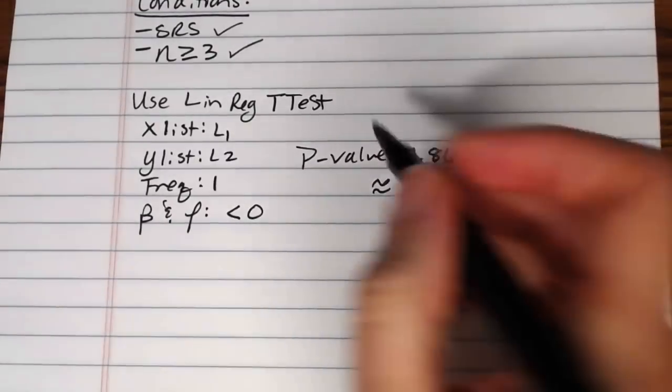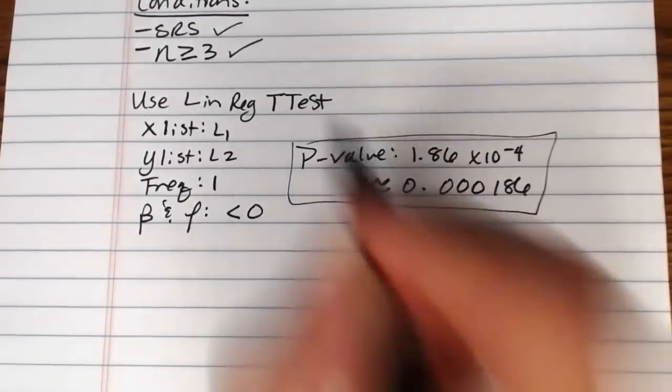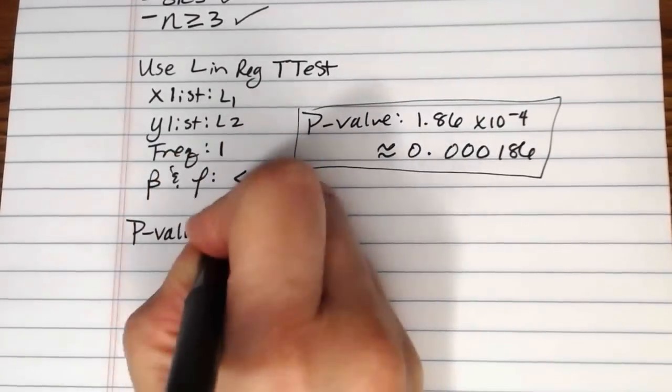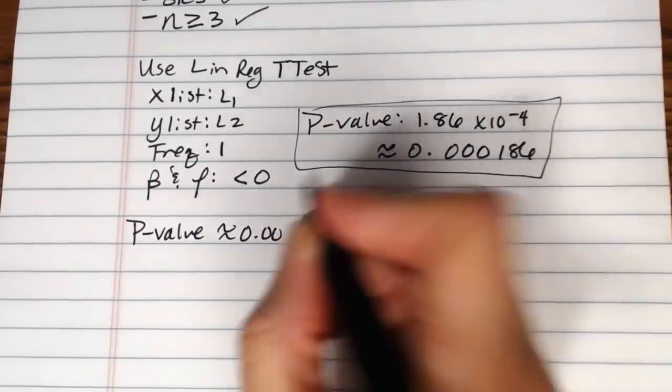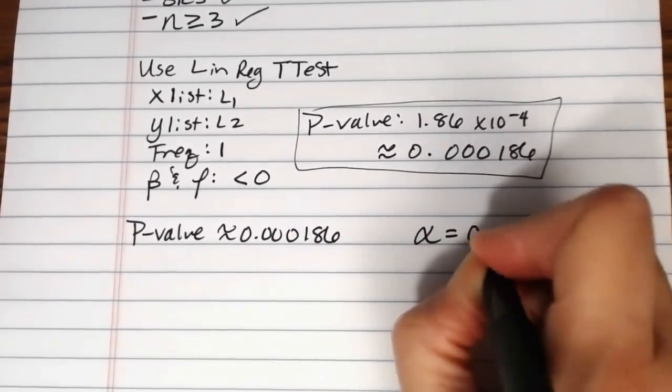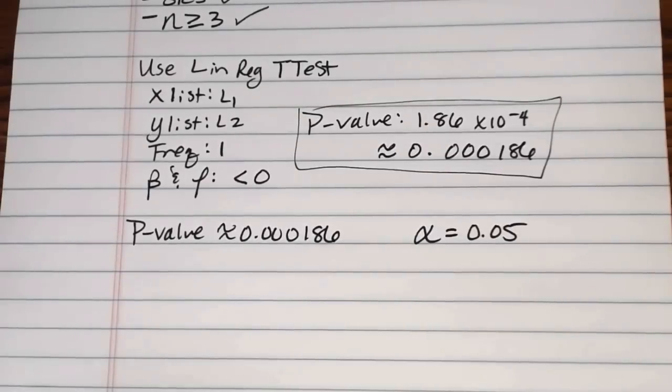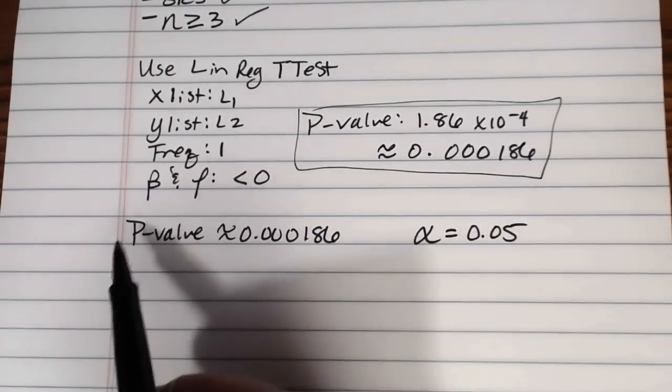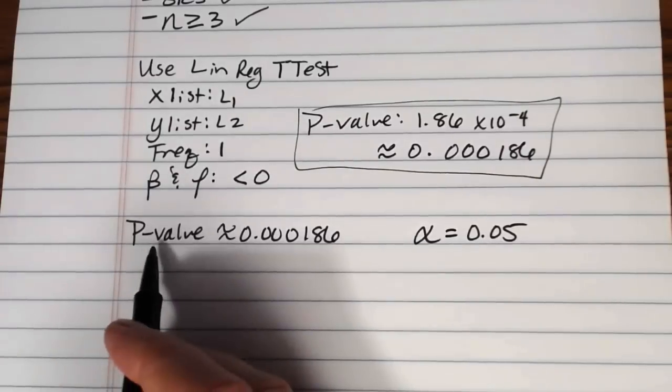So then what we do with our p-value, once we have that, is remember we compare the p-value of .000186. We compare that to our level of significance, which in this case we are using .05, 5%. And the mnemonic device to remember here is if the p is low, the H0 must go.